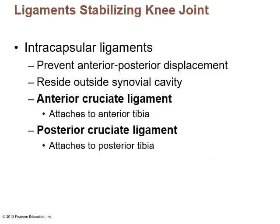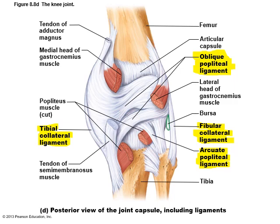There are intracapsular ligaments that prevent anterior-posterior displacement. They reside outside the synovial cavity. The anterior cruciate ligament (ACL) attaches to the anterior tibia, and the posterior cruciate ligament (PCL) attaches to the posterior tibia. They're called cruciate because they cross over each other. The ACL is the one you hear about most with injuries. This view from the back of the knee shows the oblique popliteal and arcuate popliteal ligaments.